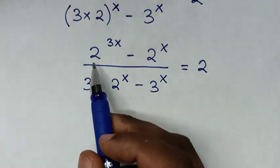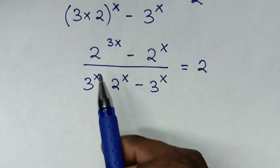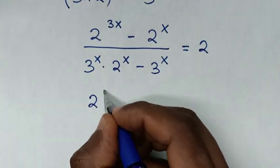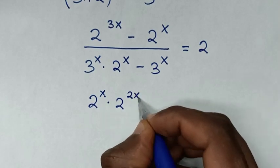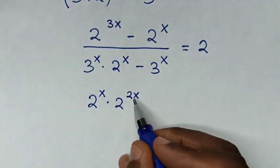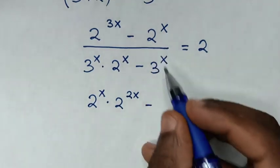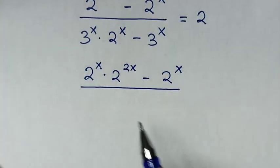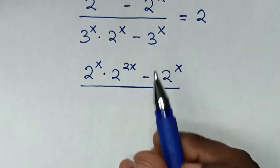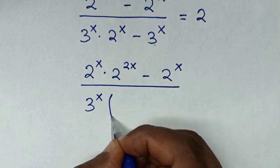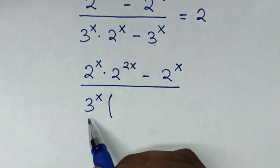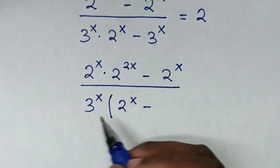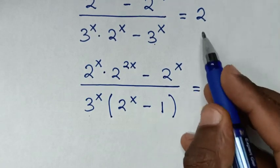In the next step, from the numerator, 2^(3x) can be written as 2^x times 2^(2x), because x plus 2x equals 3x. Then minus 2^x over — in the denominator, 3^x is common, so we take 3^x out of the bracket: 3^x times (2^x minus 1), equals 2.